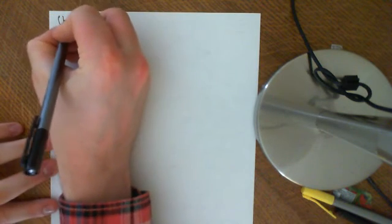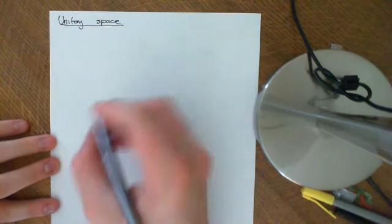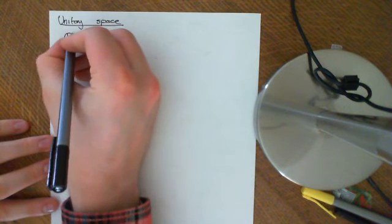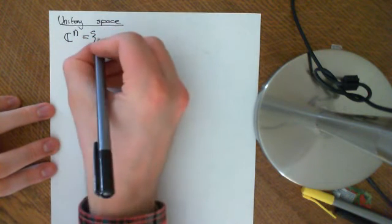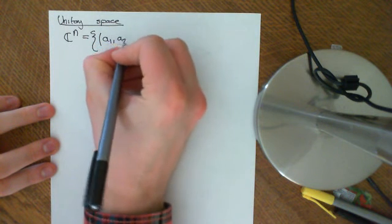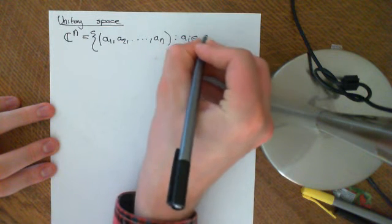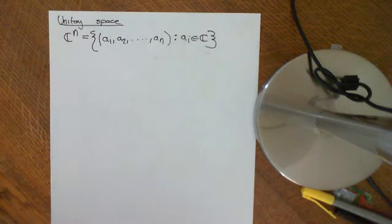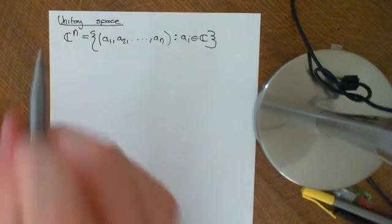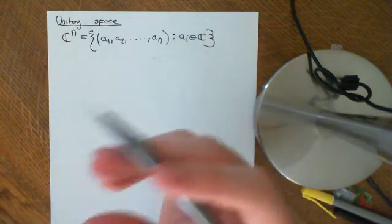That covered complex numbers C. Unitary space is a similar metric structure, but put on the set C^N — N-tuples of complex numbers. C^N is the set containing (A1, A2, ..., AN) where each Ai is an element of the complex numbers. It's the set of every possible N-tuple of complex numbers. That is just a set at the moment; once we put a metric on it, the concept is known as unitary space.